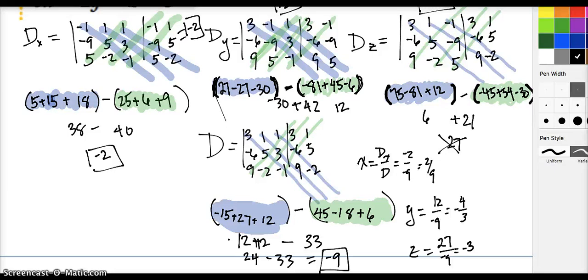The value for x is dx over d, and dx the determinant is negative 2 over negative 9, which is positive 2 ninths because those negatives cancel each other out. Y is going to be 12 over negative 9, which reduces to negative 4 thirds. I am stressing because I rewrote this column wrong, and all the work I did, I came up with the wrong answer. 27 is not the value. Let's see if I can find my mistake.